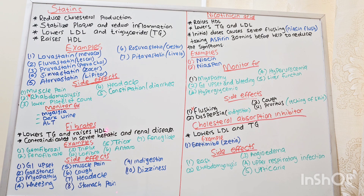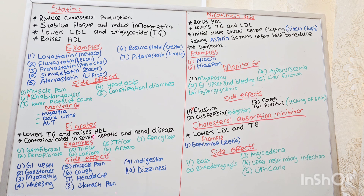Now let's discuss fibrates. Fibrates lower triglycerides and raise HDL. They are contraindicated in patients who have hepatic and renal disease. Examples of fibrates are gemfibrozil, fenofibrate, TriLipix, Lofibra, Tricor, Antara, and fenofibrate. Side effects for fibrates are GI upset, gallstones, myopathy, wheezing, muscle pain, cough, headaches, stomach pain, indigestion, and dizziness.